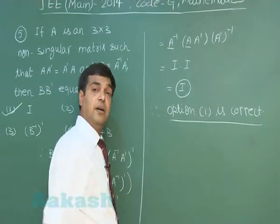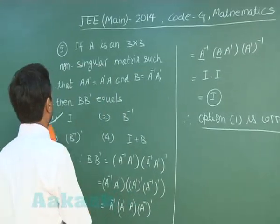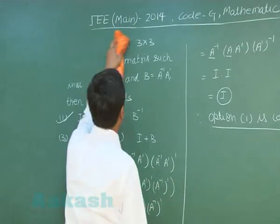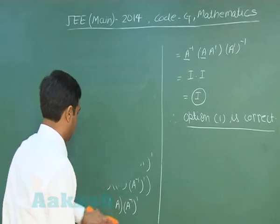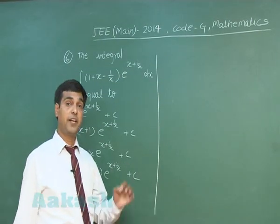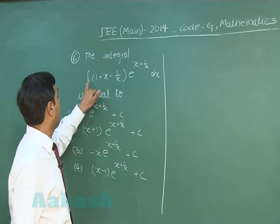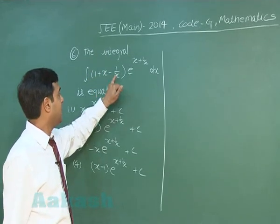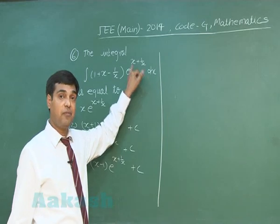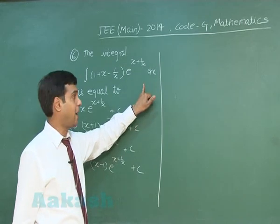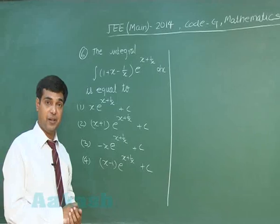Let us move to question number 6. The integral of (1 + x minus 1/x) multiplied with e to the power (x + 1/x) dx is equal to — four options are given.